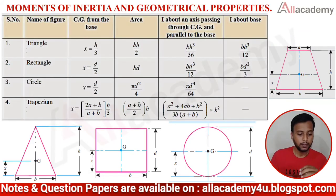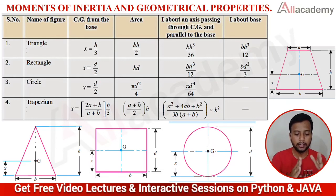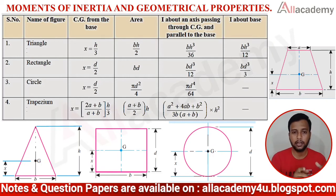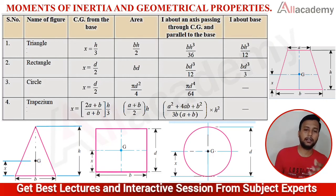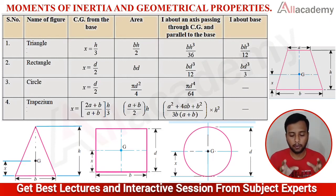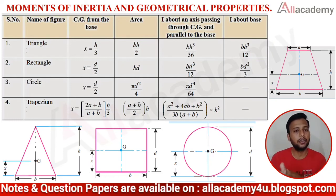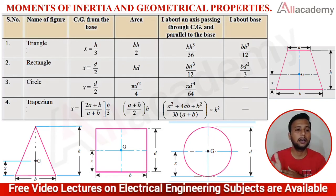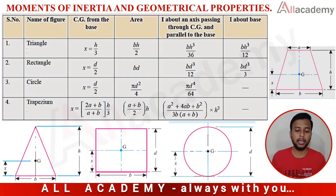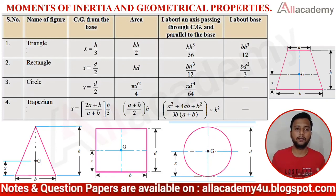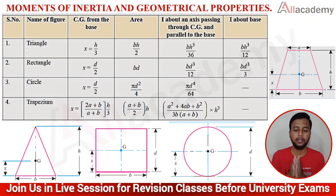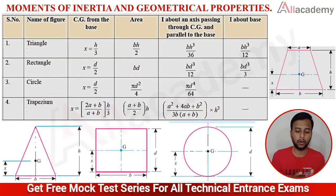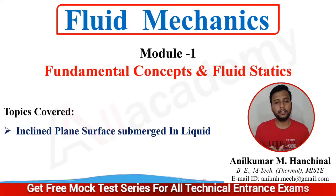This is the second section of Module 1. I have provided a table giving the center of gravity, area, and moment of inertia for different surfaces — triangle, rectangle, circle, and trapezoid — because the equation involves moment of inertia for different shapes. This table will be very useful since numericals are based on these arbitrary shapes. Please take a screenshot of this table.